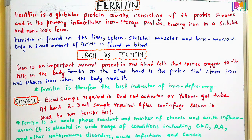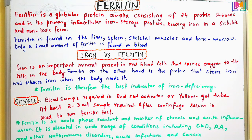Now we will discuss the important point: what is the difference between iron and ferritin, and which test is more important to check first? Iron is an important mineral — iron by nature is a mineral. Ferritin, as discussed, is a protein by nature. The body needs different types of minerals like iron, calcium, magnesium, phosphorus, sodium, and potassium, which we get from a variety of foods or multivitamins available in pharmacies.